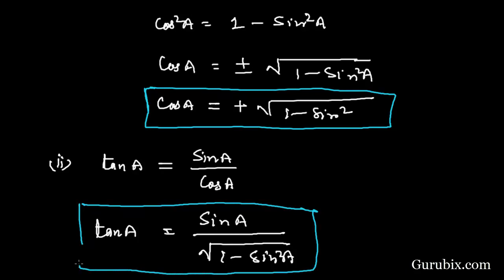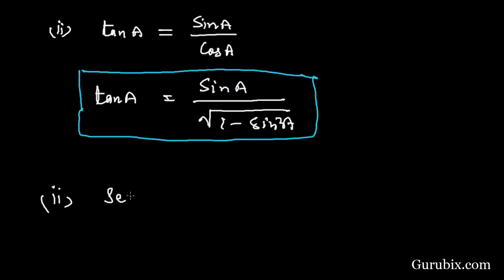Now we shall write sec A in terms of sin A. Then we have sec A = 1 / cos A, and we know that cos A = √(1 - sin²A). So sec A = 1 / √(1 - sin²A).